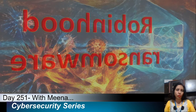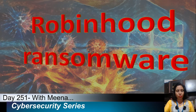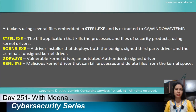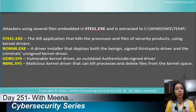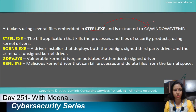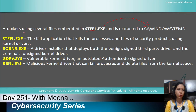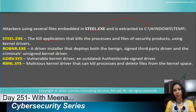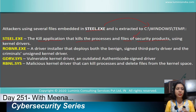RobinHood ransomware uses several files to perform its attacks. It contains a file called steel.exe which it extracts into the Windows temp folder, along with a number of other files. The most important file is steel.exe — it is the killing application that kills the processes and files of security products. So when we say it kills antivirus, this is the culprit file responsible for stopping antiviruses.